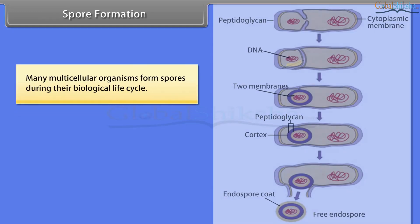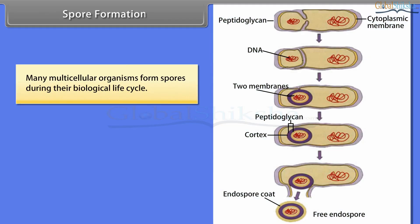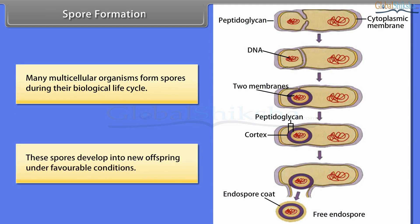Many multicellular organisms form spores during their biological life cycle. These spores develop into new offspring under favorable conditions.